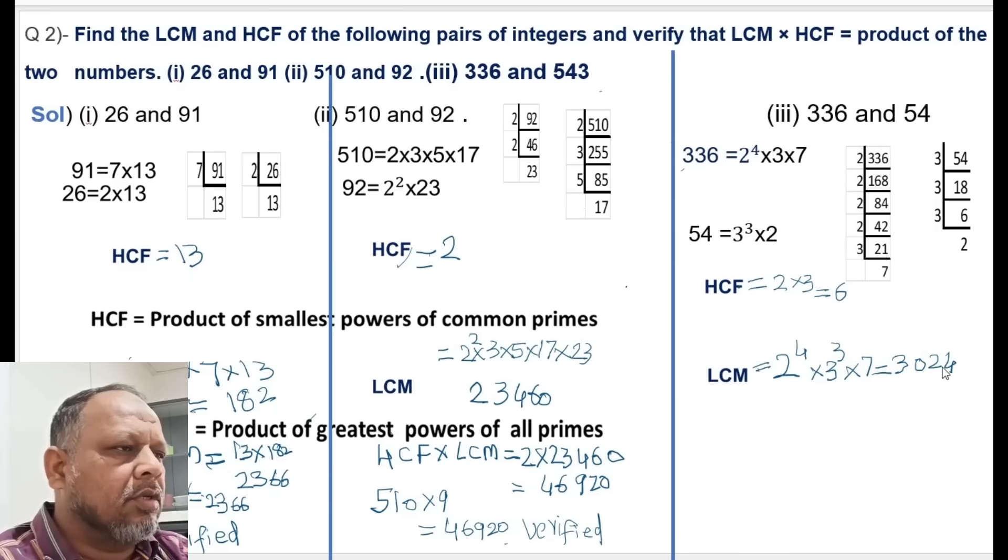Now we have to verify HCF multiplied by LCM. 6 multiplied by 3,024 which is equal to 18,144. This should be equal to the product of the two numbers.